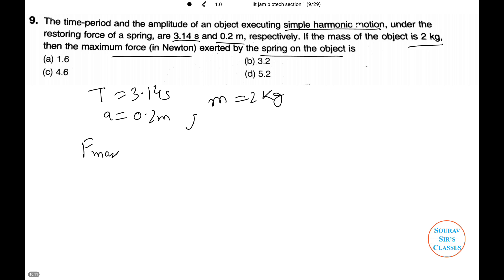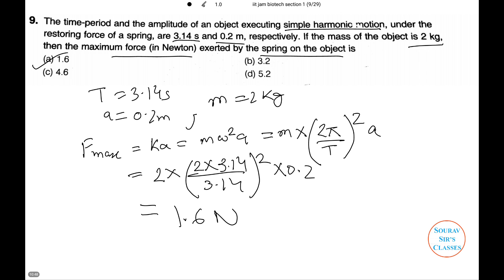Thus, we know F max equals KA which in turn equals M omega squared A. M into 2π by T, which is the formula for omega, squared times A. Putting in the values, 2 into 2 into 3.14 by 3.14 whole squared into 0.2, and upon calculation the value comes as 1.6 N. Thus, option A is our answer.